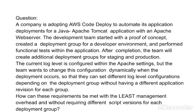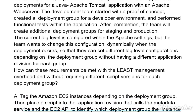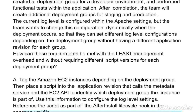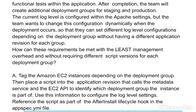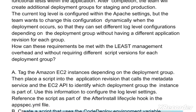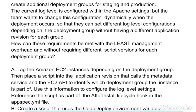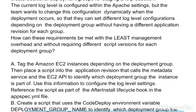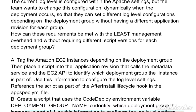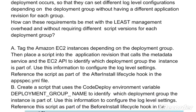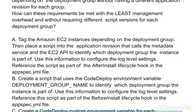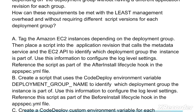Option A: Tag the Amazon EC2 instances depending on the deployment group, then place a script into the application revision that calls the metadata service and the EC2 API to identify which deployment group the instance is part of. Use this information to configure the log level settings. Reference the script as part of the AfterInstall lifecycle hook in the appspec.yml file.